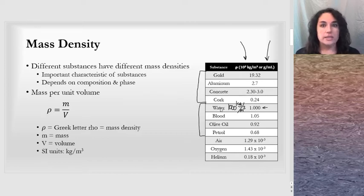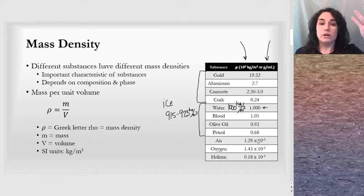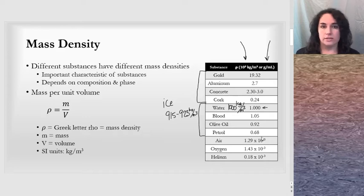Ice is less dense than water. That's why it floats. Ice, for instance, is about 915 or 923 kilograms per meter cubed, and we can see that things that have a lower density float above things that have a higher density. That's an important concept and idea for mass density.